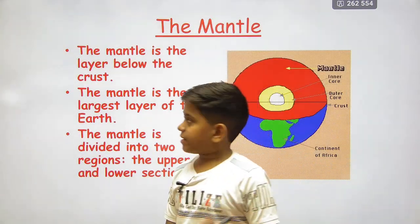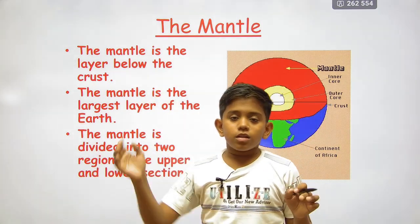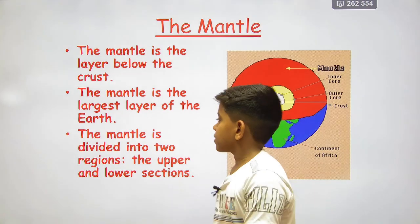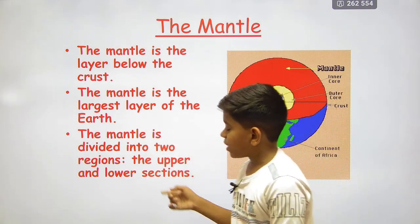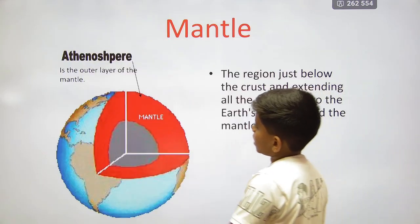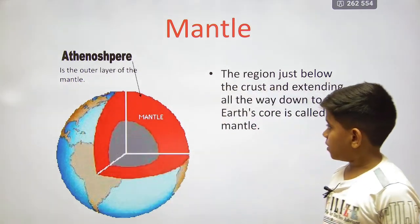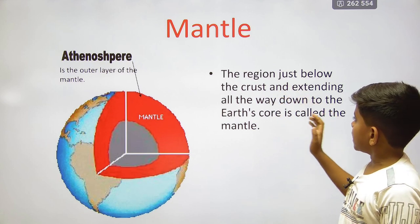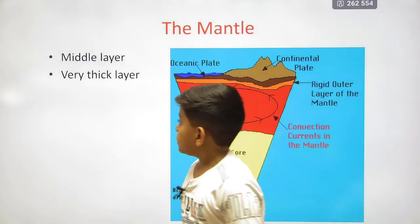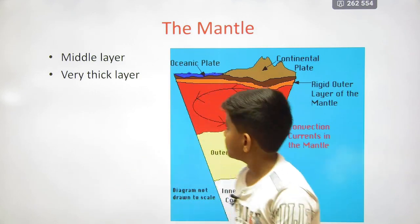Next we have the mantle. The mantle is the layer below the crust, and it is the largest layer of the earth. The mantle is divided into two regions: the upper and the lower sections. The region just below the crust and extending downward is called the mantle, and it contains molten magma.